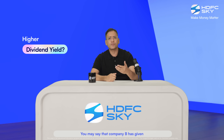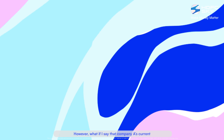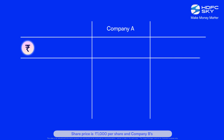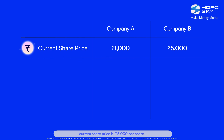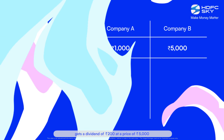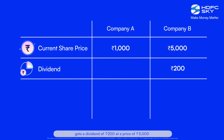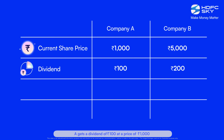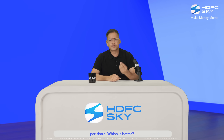You may say that company B has given more dividends. However, what if company A's current share price is 1000 rupees per share and company B's current share price is 5000 rupees per share? So an investor in company B gets 200 rupees dividend at 5000 rupees per share, and an investor in company A gets 100 rupees at 1000 rupees per share. Which is better?